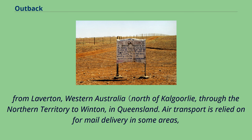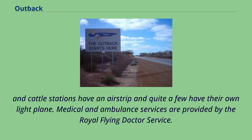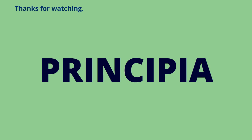The proposed Outback Highway would run from Laverton, Western Australia, north of Kalgoorlie, through the Northern Territory to Winton, in Queensland. Air transport is relied on for mail delivery in some areas owing to sparse settlement and wet-season road closures. Most outback mines have an airstrip and many have a fly-in-fly-out workforce. Most outback sheep and cattle stations have an airstrip and quite a few have their own light plane. Medical and ambulance services are provided by the Royal Flying Doctor Service.